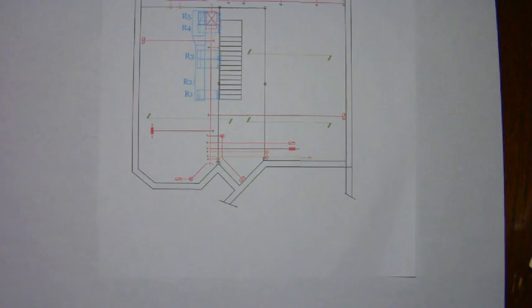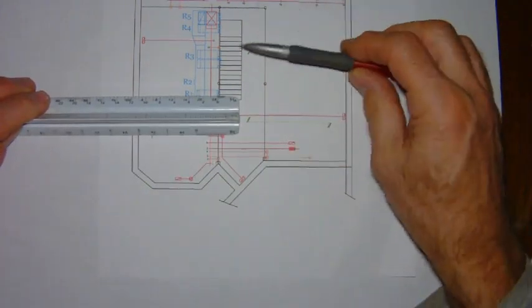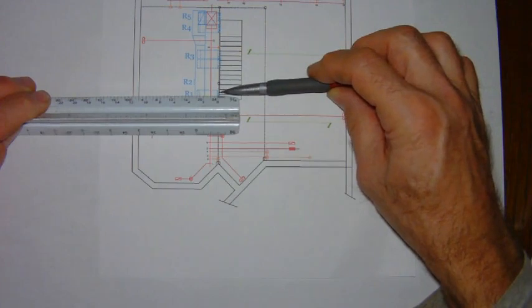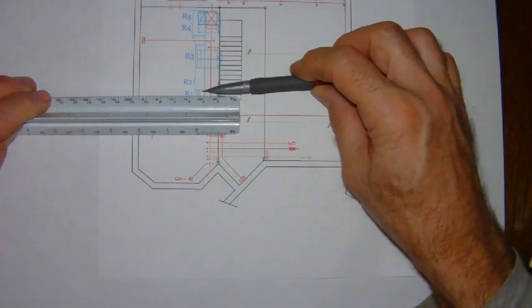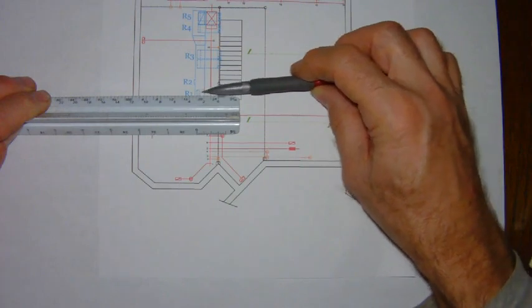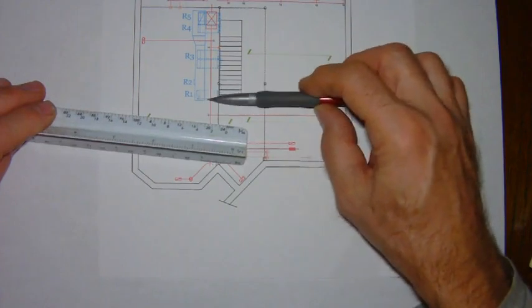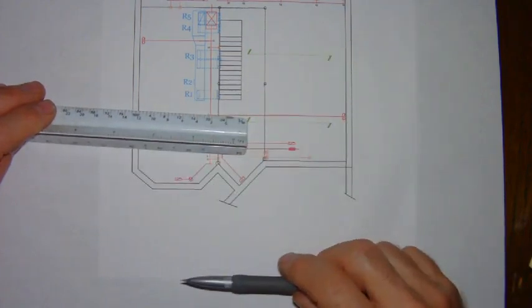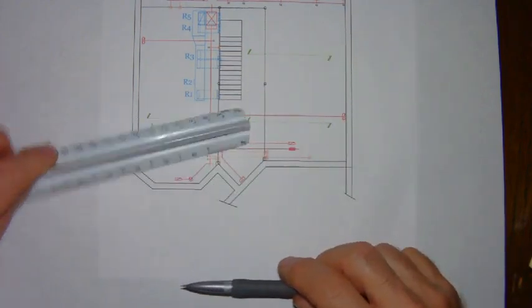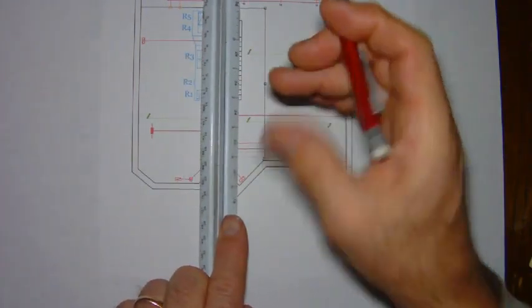Now here we can measure the horizontal distance and I recommend you simply measure from the center of the fitting over to the center of the duct. In this instance, we've got about two and a half feet, and so with duct design, you simply round that up to the next whole number.